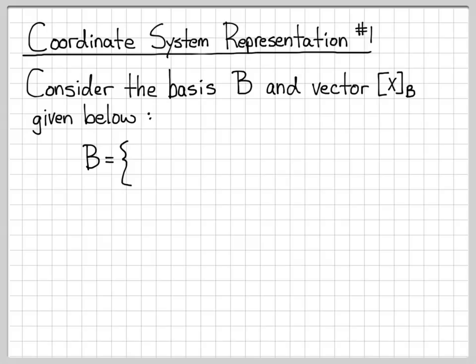In this problem, we're going to work with the basis represented by 2, 2, 4, negative 1, 0, 3, and 1, 1, 1. It turns out that these vectors are all linearly independent, so they form a basis for R3.